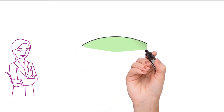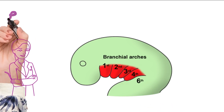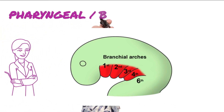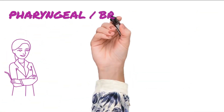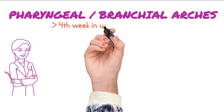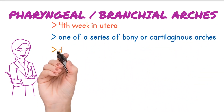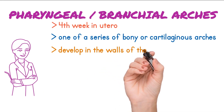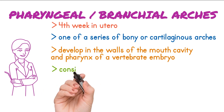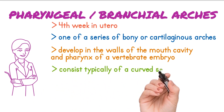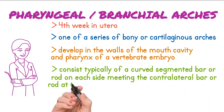Welcome to all students from the Dentistry Online channel. Today our topic of lecture is pharyngeal arches, also known as branchial arches. Branchial arches are seen at the fourth week in utero. These arches are one of a series of bony or cartilaginous arches that develop in the walls of the mouth cavity and pharynx of a vertebrate embryo, consisting typically of a curved segmented bar or rod on each side meeting the contralateral bar or rod at the ventral end.